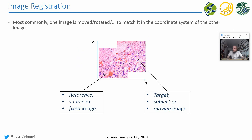Depending on which software you work with or who you talk to, you will realize there are different terms for the same thing. Usually we transform one image from one coordinate system into the coordinate system of another image. We have one fixed image — also called the reference image or the source image. And we try to bring the other image into the same coordinate system, which is the target image or the moving image. You find these terms in software which does this.